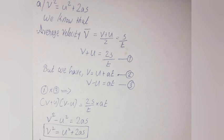Answer A: We know that average velocity is equal to v plus u divided by 2, which equals s by t. Therefore, v plus u is equal to 2s by t. Let us consider it as equation number 1. But we have v is equal to u plus at. Consider it as equation number 2. By rearranging equation number 2, we get equation number 3. By multiplying equation number 1 into equation number 3, we get v square is equal to u square plus 2as.